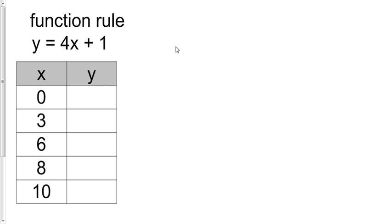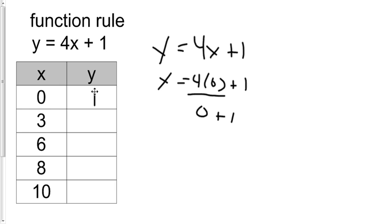So my function rule is Y equals four X plus one. X in the first case would be zero because that's the value that's given to me. Here's zero. So zero times four is zero. And zero plus one is one. So there's my output.